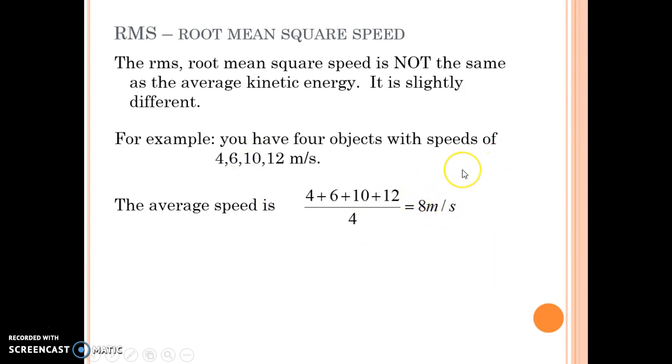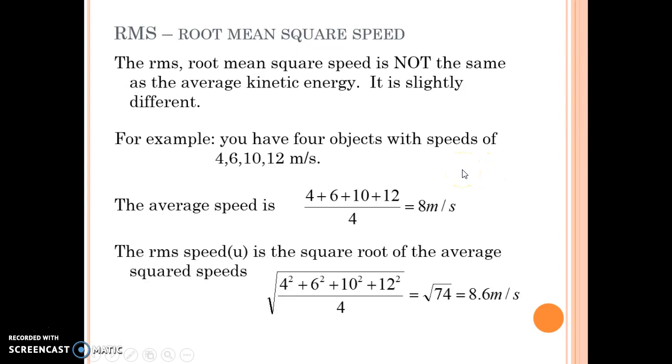The root mean square speed, however, is a little bit different. Root mean square speed, I'm going to square each of the speeds, get an average, and then I'm going to take the square root of that. And so that winds up being slightly higher than the average speed.